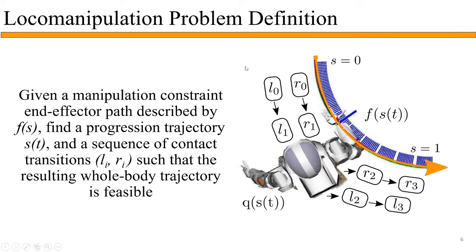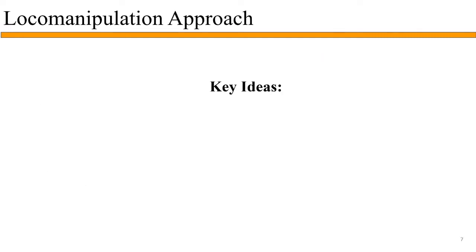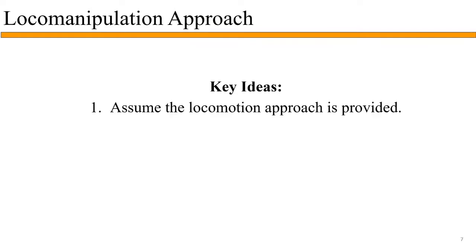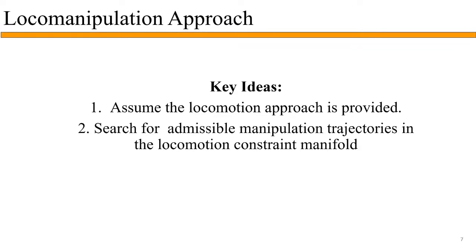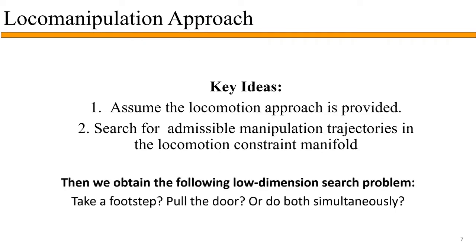If we can find the progression trajectory and a sequence of contact transitions, then we solve the local manipulation problem. To solve this, we use two key ideas. First, we assume that the locomotion approach is provided, which defines our locomotion constraint manifold. Second, we search for admissible manipulation trajectories in the locomotion constraint manifold. With this approach, we obtain a low-dimensional search problem — should we take a footstep, pull the door, or do both simultaneously? In essence, the decision asks: should we locomote, manipulate, or loco-manipulate?